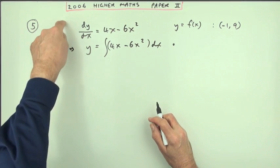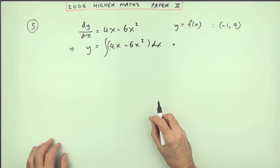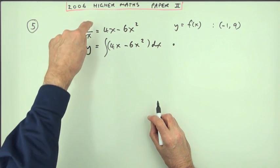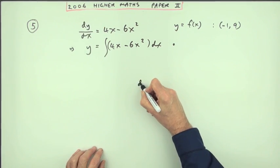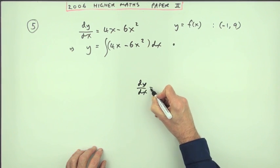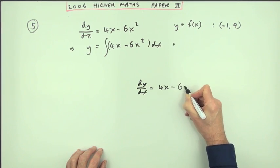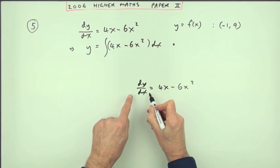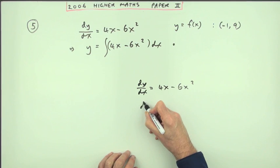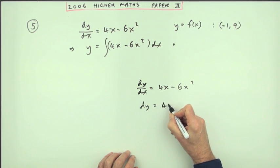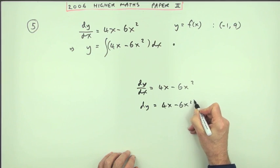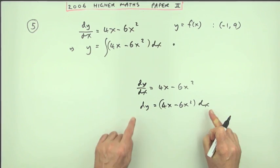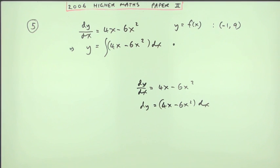Just a wee note here, this is actually called a differential equation. To get back to y, strictly speaking, what you do is this: you've got dy by dx equals whatever its formula is. Taking the dx across and multiplying gives you dy equals 4x minus 6x squared all times dx. These are the differentials. And to bring them back up again, you then integrate both sides.